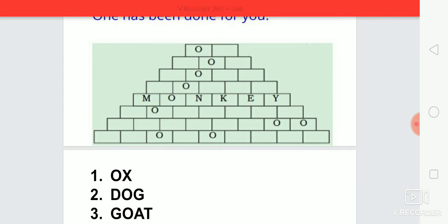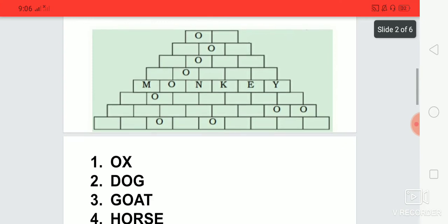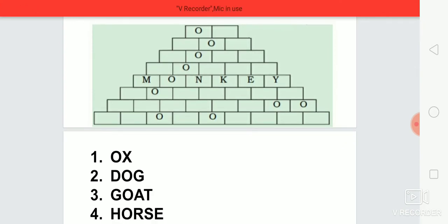In the third row, write goat. First box G, second box O they only wrote, third box A, fourth box T. In the fourth row, think what we can write. We can write horse. First box H, second box they only wrote, that is O. In the third box, write down R.